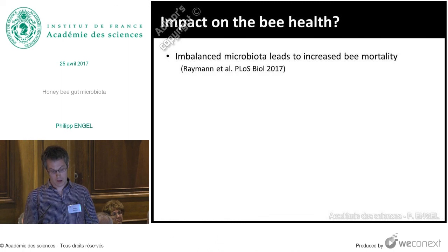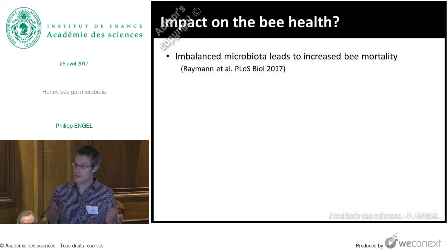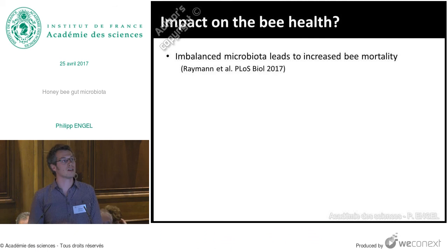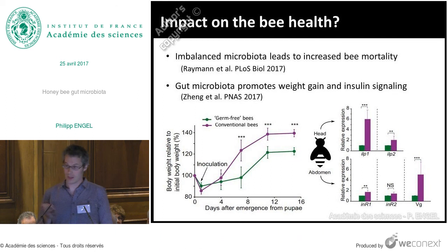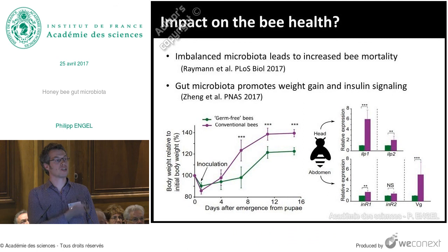What is the impact of this gut microbiota on bee health? Until recently we knew very little, but two papers came out from the laboratory of Nancy Moran, where I also did my postdoc. The first paper showed that an imbalanced gut microbiota leads to increased bee mortality in the hive — really the first experimental evidence that the microbiota has an impact on bee health under natural conditions. The other paper, which came out last week, showed that the gut microbiota promotes weight gain and insulin signaling. These bees kept in the laboratory can be rendered germ-free and colonized with the microbiota, and the colonized bees gain weight much faster than germ-free bees.